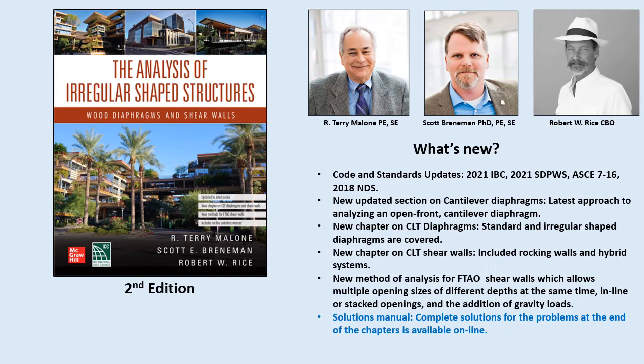Since our first edition, significant updates have been added to improve the content of the book, including code references updated to the 2021 IBC, 2021 structural design provisions for wind and seismic, ASCE 7-16, and the 2018 NDS. Chapter six has been updated to provide the latest approach to analyzing an open front cantilever diaphragm. Two new chapters have been added addressing CLT diaphragms and shear walls. A new method of analysis developed by the authors for force transfer around openings and shear walls has been included, and an online solutions manual is available for the problems at the ends of the chapters.